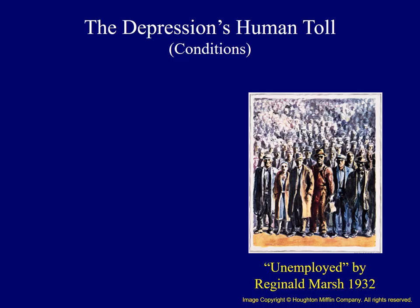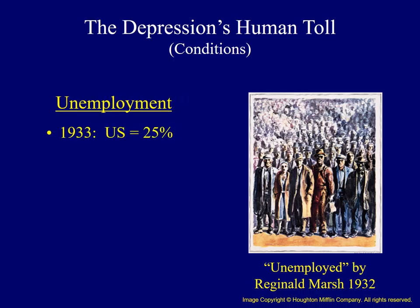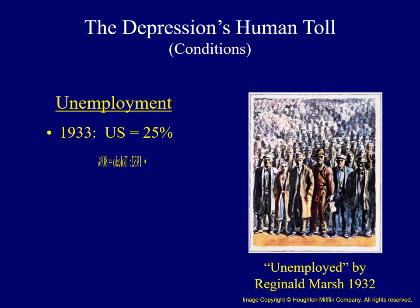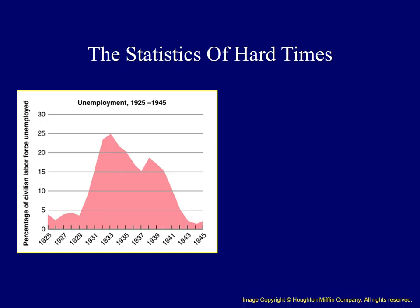In 1932, Toledo had an unemployment rate of 80%. This table provides more information on unemployment rates. Beginning in 1929, we see a huge rise in unemployment, and by 1933, 13 million Americans were unemployed. We don't see those unemployment rates dropping dramatically until the early 1940s.